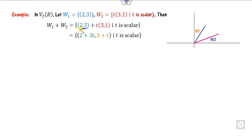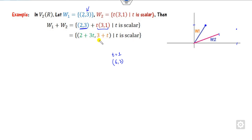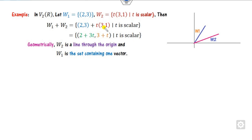This element belongs to w1 and this to w2. If this is a single point like (2,3), and t is a scalar, when t=1 it gives (3,1), when t=2 it gives (6,2), and so on. Clearly w2 is a line passing through the origin, since when t=0 it gives (0,0). While w1 is a set consisting of only one vector.